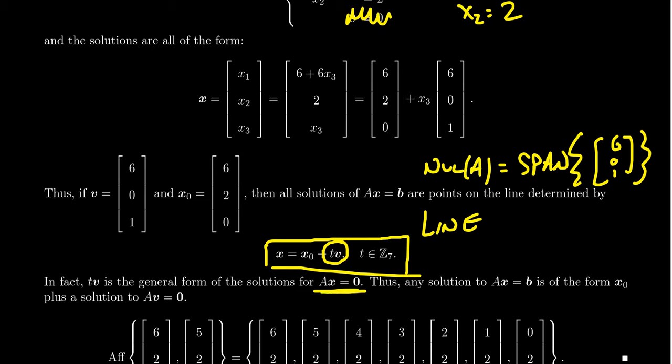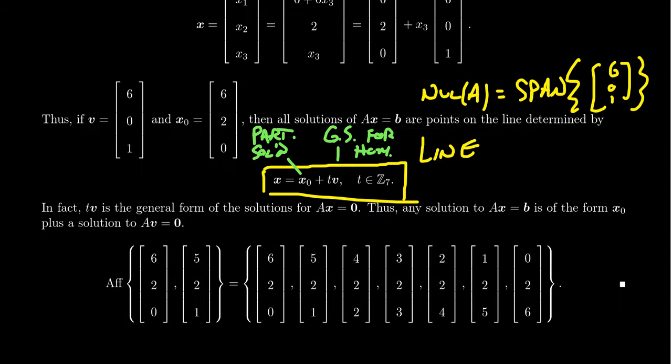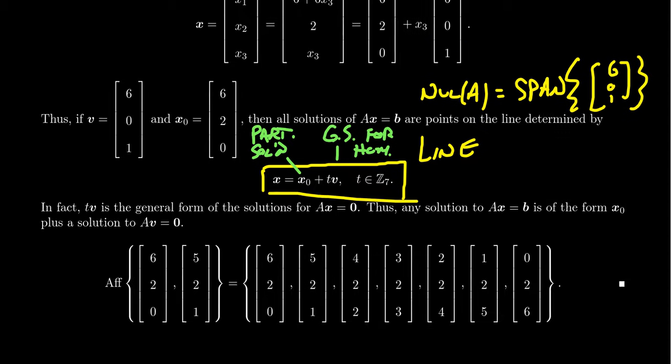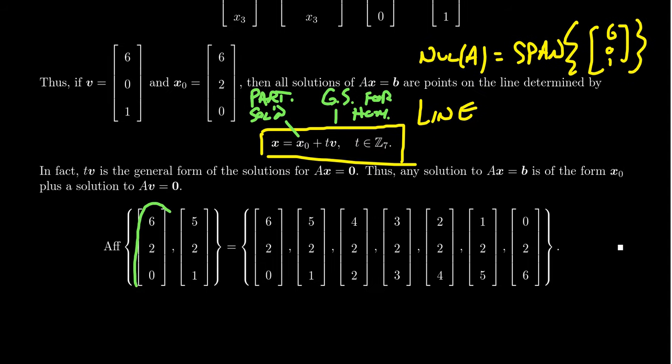T V is the general solution to the homogeneous system right here. And so when you compare these things, you see that you get the general solution for the homogeneous system, and then this right here is what we call a particular solution. So it's a vector that does solve this non-homogeneous system. And if you combine a particular solution with the general solution of the homogeneous system, that actually gives you the general solution to the non-homogeneous system. And as we can see that this is a line, X equals X not plus T V,